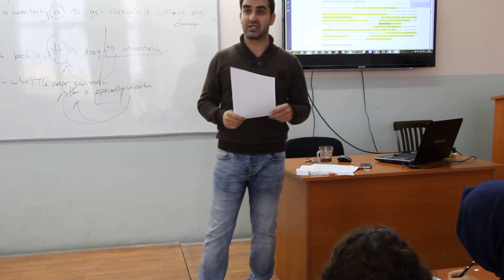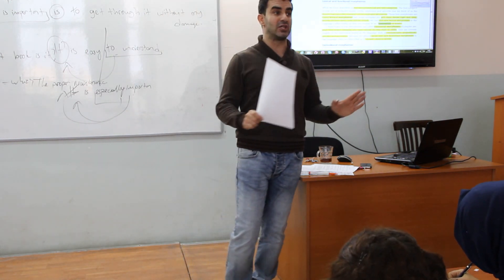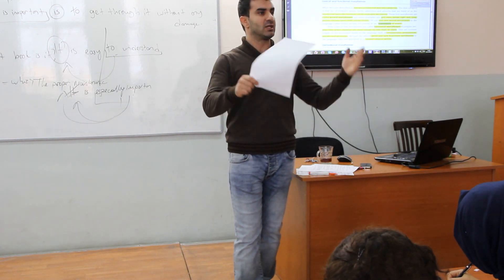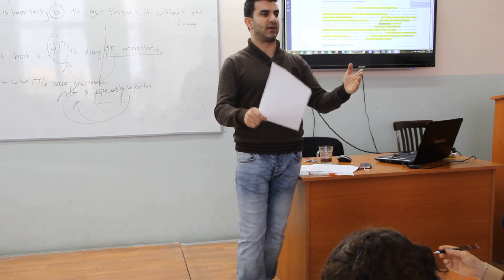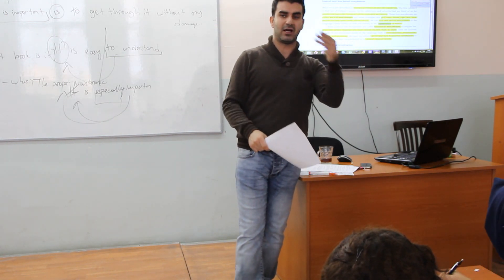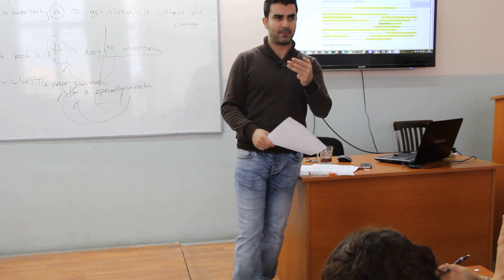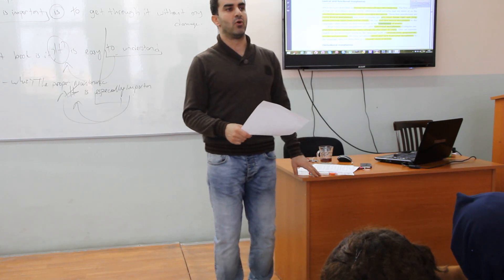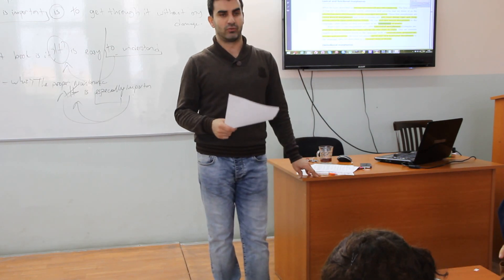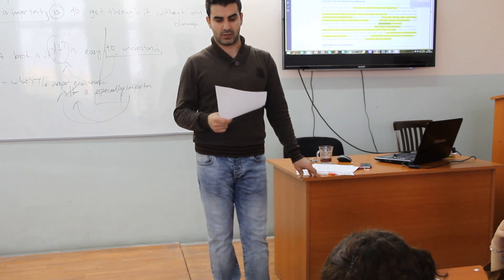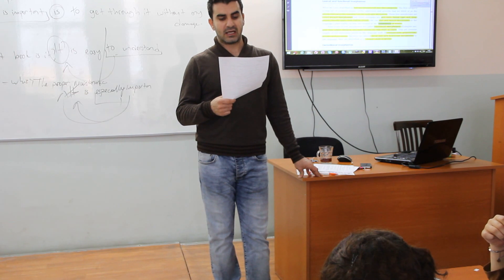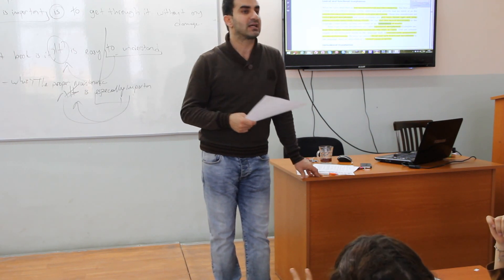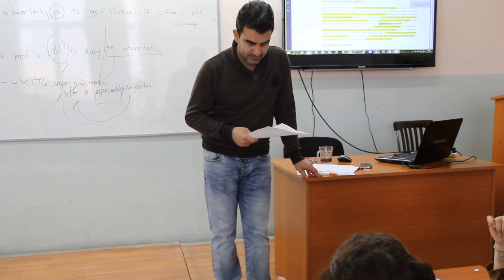Kelimenin başında onset — girişte, başlangıç — sessiz harf. İki tane de harf, üç tane de. So it can be more than two. What is it called? Cluster. Consonant cluster.